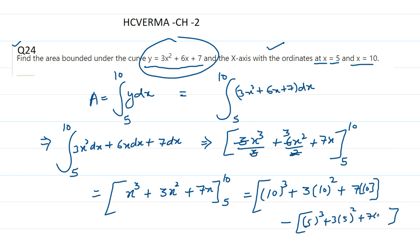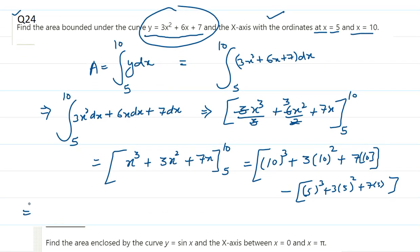So this will become 10 cubed is 1000, so it is 1000 plus 100 into 3 that is 300 plus 70, minus 5 cubed which is 125 plus 25 times 3 that is 75 plus 35. So we solve this: 1370 minus 235, which gives us 1135.